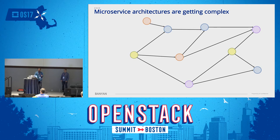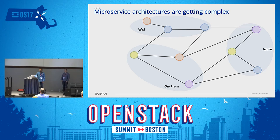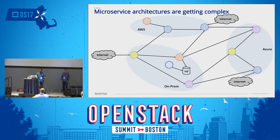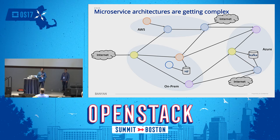Over time, microservice architectures are getting more complicated. Applications are now getting spread across different clouds — AWS, on-prem, and Azure. The microservice also has multiple interaction points with the internet. These microservice applications don't live in a silo; they are present in the context of other applications — for example, interacting with a SQL database and a Kafka messaging system. Therefore, a solution needs to address not just simple microservices but should go beyond that.